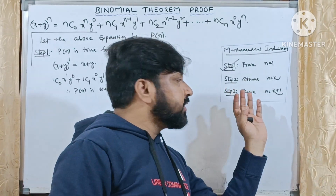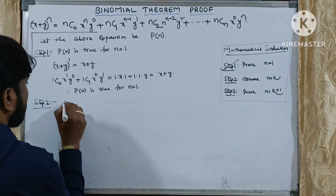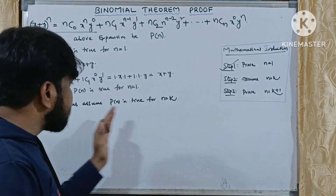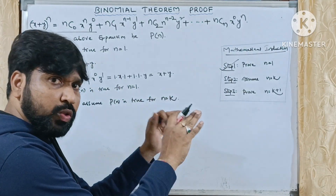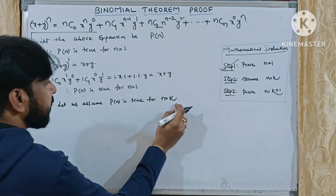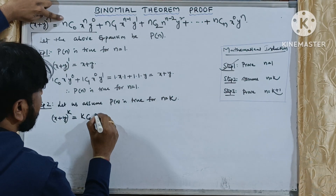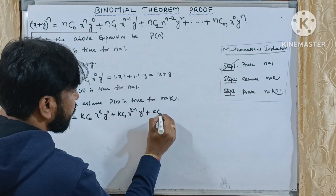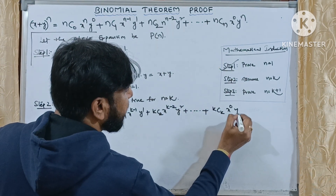Step two is very easy — we need to assume this is true for n = k. Let us assume P(n) is true for n = k, meaning the expansion is already satisfied for n = 1, 2, 3, ... up to k. Replacing n with k: (x + y)^k = kC0·x^k·y^0 + kC1·x^(k−1)·y^1 + kC2·x^(k−2)·y^2 + ... + kCk·x^0·y^k. Step two is completed.